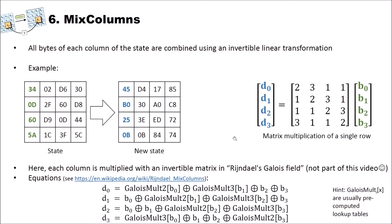To implement the mix column step, you only need to implement these four equations on each column, and you have implemented mix columns. The mix column step is another way to permute the state — so we have the substitution step and then these two permutation steps.